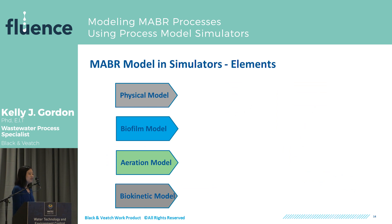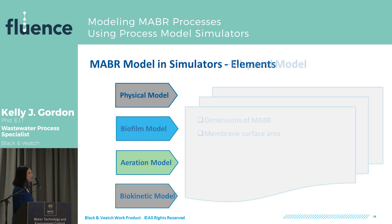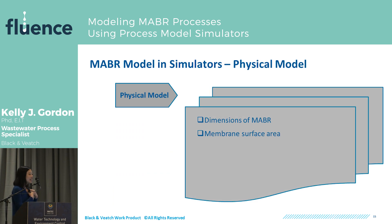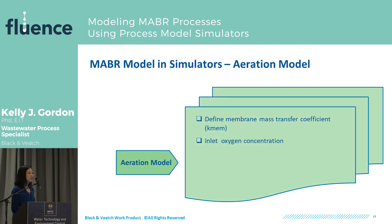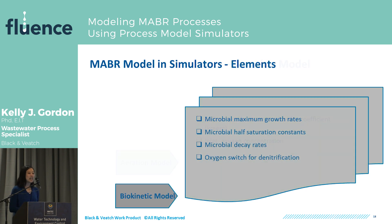Within this one-dimensional biofilm subunit in GPSX, we can categorize the physical model, the biofilm model, the aeration model, and the biokinetic model. The parameters needed include: for the physical model, the dimensions of the MABR and the membrane surface area. For the biofilm model — these parameters are harder to get at — we need the liquid diffusion layer thickness, biofilm thickness, dry weight, rate of attachment and detachment, diffusivities within the biofilm, and solids exchange rate. For the aeration model, we need the mass transfer coefficient across the membrane material and the inlet oxygen concentration. For the biokinetic model, we want to know the kinetic and stoichiometric rates of each microbial process we're trying to capture.